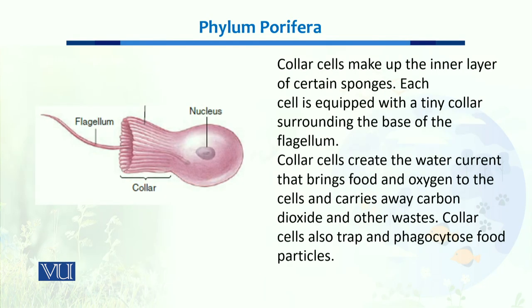When we talk about the collar cells, the sponges are made up of tiny collar cells. This is the structure of a collar cell. It has a nucleus and it has a definite flagellum, which helps in creating the current and in the movement of water from inside and outside.